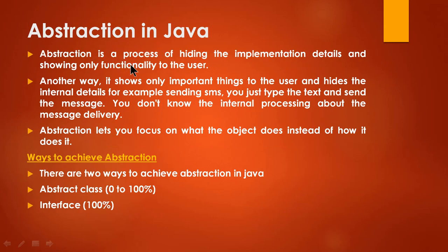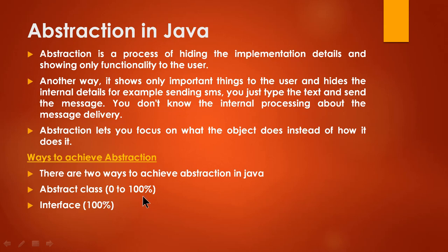Abstraction in Java is a process of hiding implementation details and showing the functionality to the user. Abstraction lets you focus on what the object does instead of how it does it. There are two ways to achieve abstraction in Java: abstract class (0 to 100%) and interface (100%). It is 0 to 100% for abstract class because you can have a constructor and other concrete methods, but your class is still abstract. Interface is purely 100% abstract.